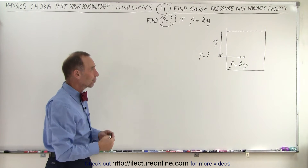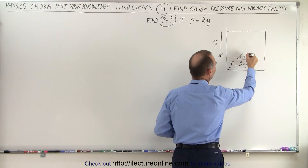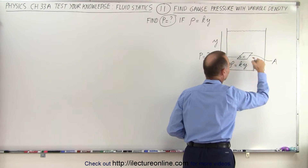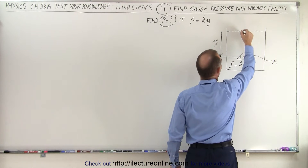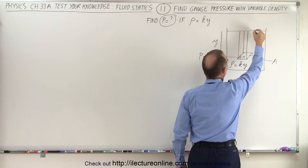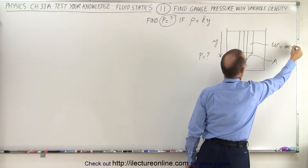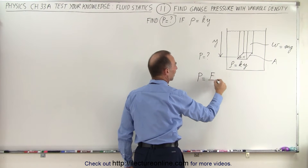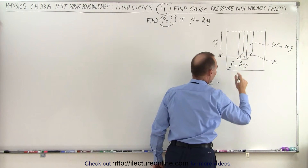To do that, we have to go back to our basics. We have to realize that the pressure inside the liquid is essentially equal to the force on a small area. So let's say there's a small area at the location where we want to find the pressure, and the force applied to that area would be the weight of the liquid above it. The pressure by definition is equal to the force divided by the area — in this case, the weight of that column of liquid above that small area.